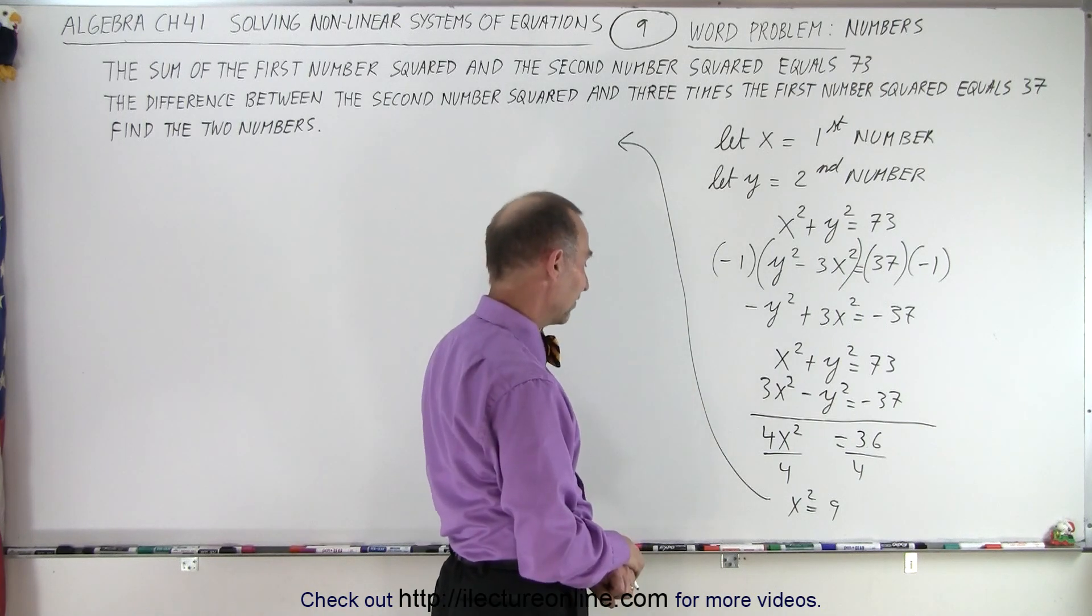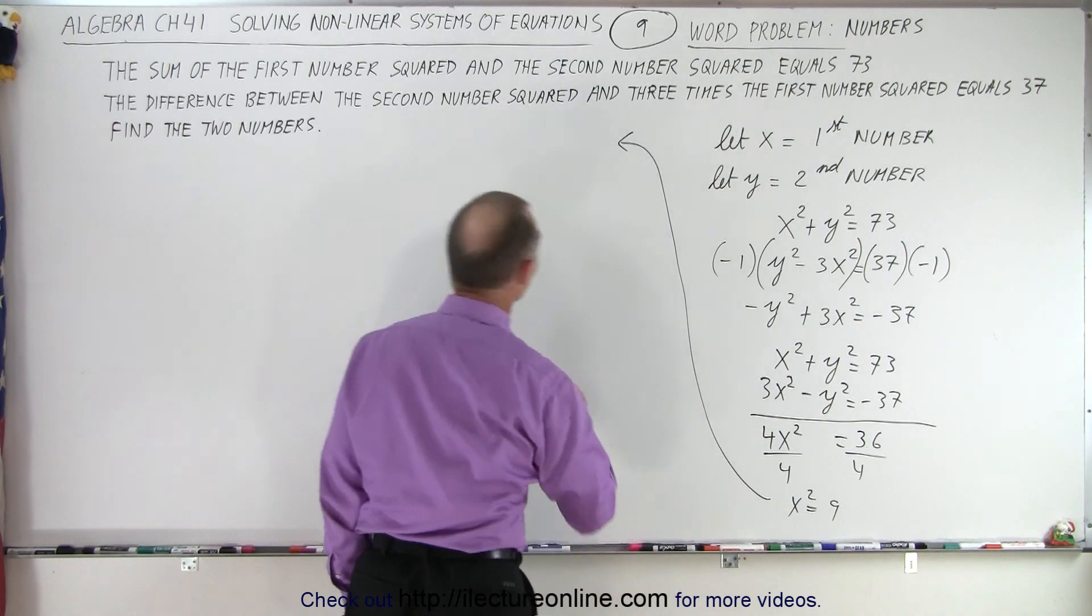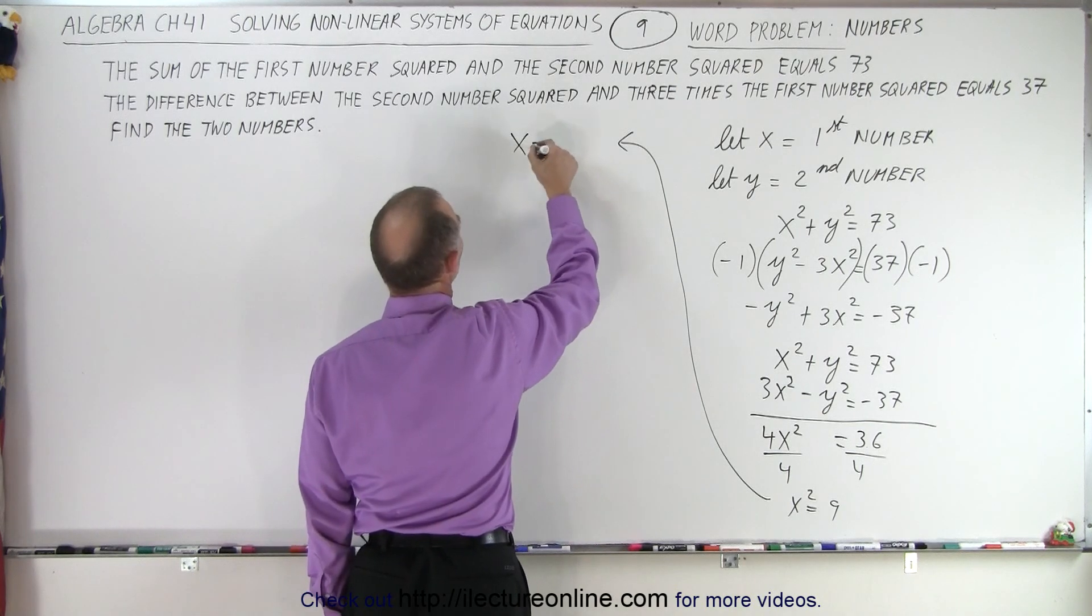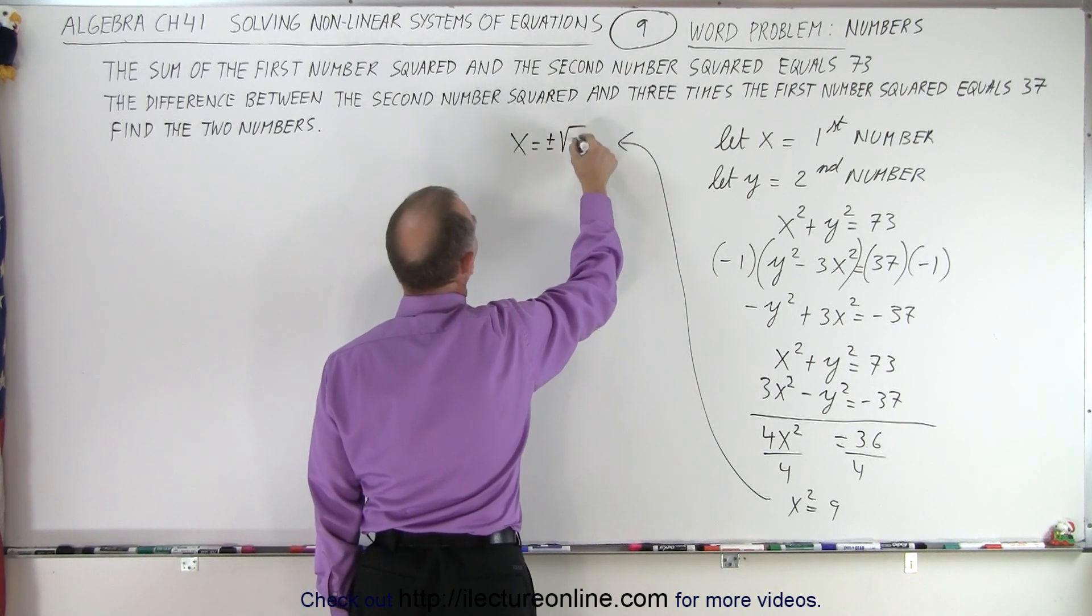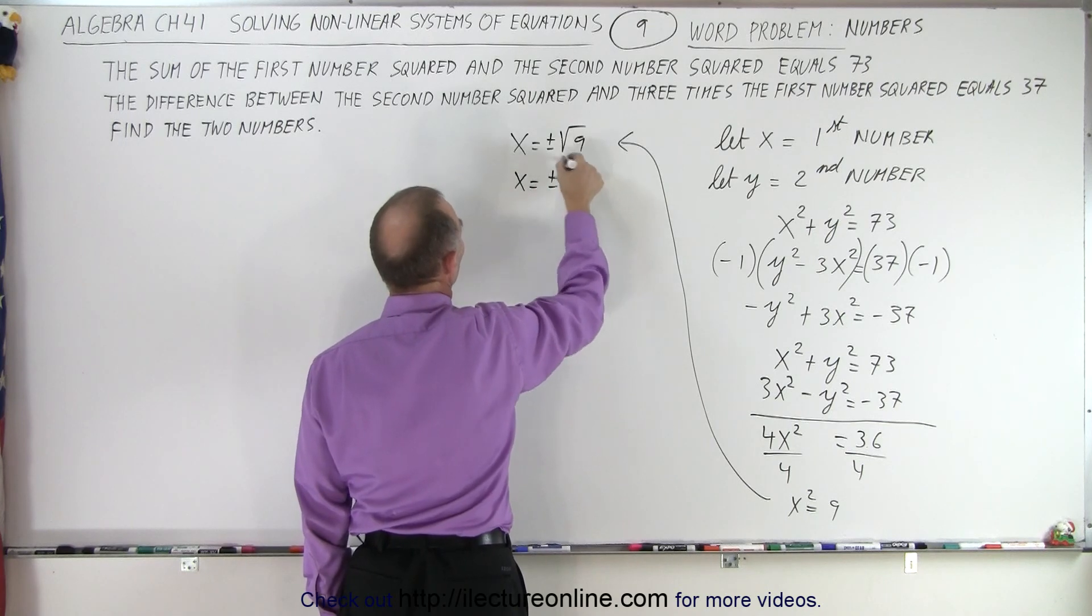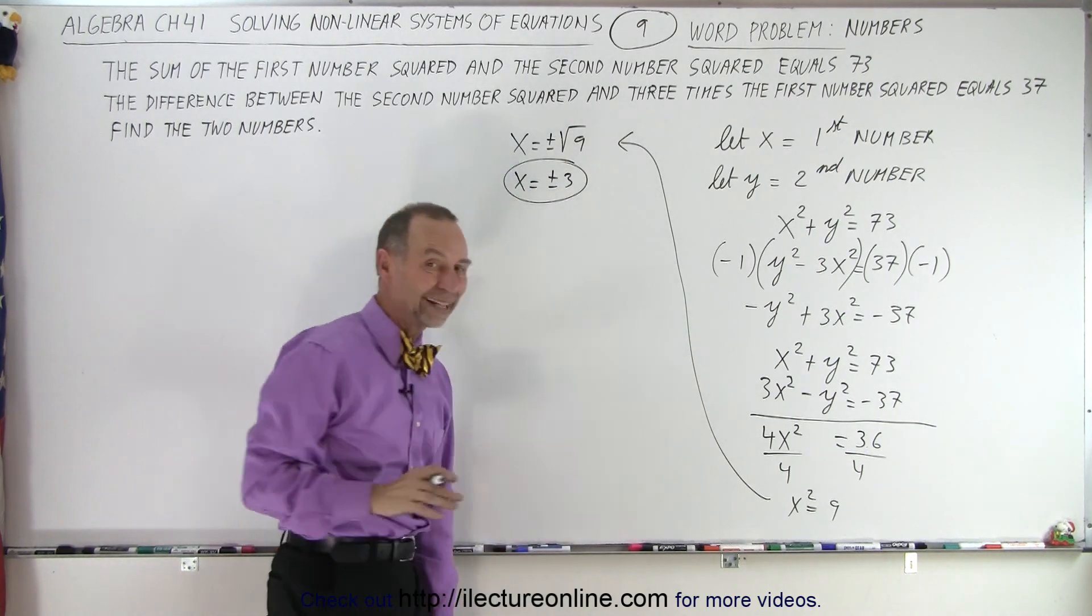36 plus 37 is indeed 73. So now x squared equals 9. That means x is equal to plus or minus the square root of 9 or x equals plus or minus 3. So we have two possible solutions for x.